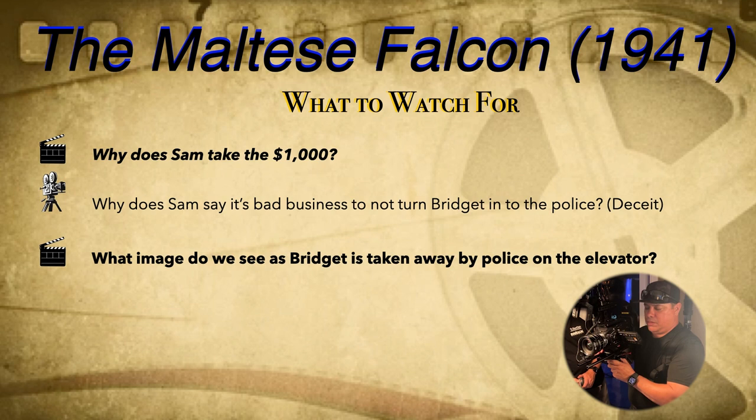Other things to look for: Why does Sam take the $1,000? Why does Sam say it's bad business to not turn Bridget into the police? Think about one of the themes we're talking about — deceit. And what image do we see as Bridget is taken away by police on the elevator? There's a lot to look for in this particular film. Think about those themes we discussed and how all these different elements, questions, and things to look for play into the style of the film. Hopefully you enjoyed the film — if you've got any questions, please reach out.